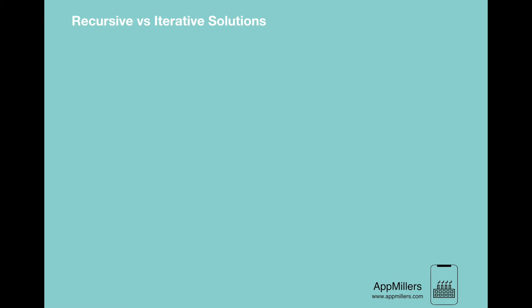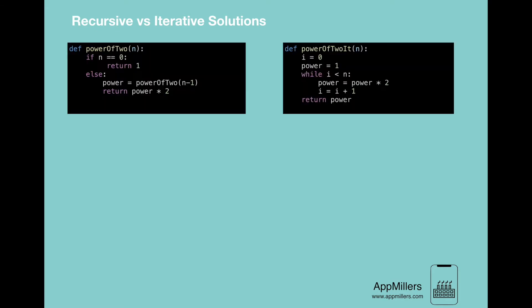Here in this video we will compare recursion versus iteration. As we said, all recursive algorithms can be implemented iteratively, although sometimes it's much more complex to do it. Let's look at an example implemented in both ways — both methods calculate the nth power of 2, and both take n as an integer parameter.